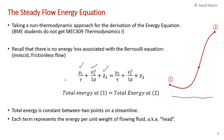In this form of the Bernoulli equation, each term represents energy per unit weight of the flowing fluid. Each term is referred to as head — we have pressure head, velocity head, and elevation head.